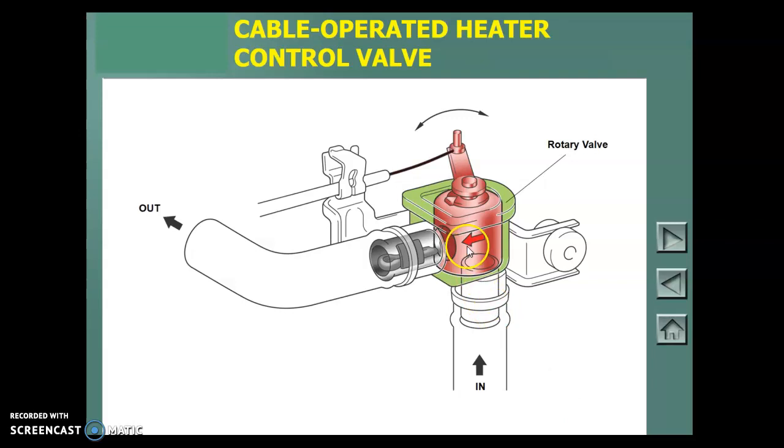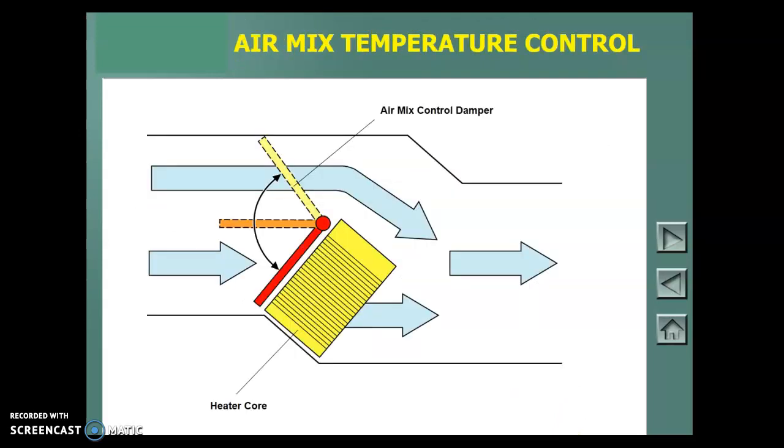Here's another picture of that valve. Cable operated, blocks water to the heater core, could get plugged up, and prevent heat. So, another reason why you could have no heat. Here's another picture of that blend door process. So, if we want heat, this temperature blend goes up here, all the air goes through the heater core. But, want air conditioning or no heat, this blend door goes down, all the air goes around it.